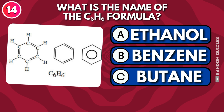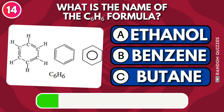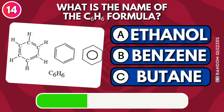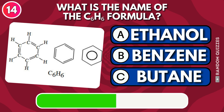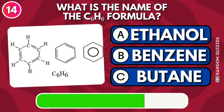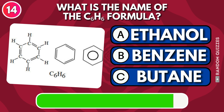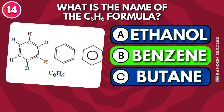What is the name of the hexacarbon hexahydride formula (C6H6): ethanol, benzene, or butane? Answer: Benzene.